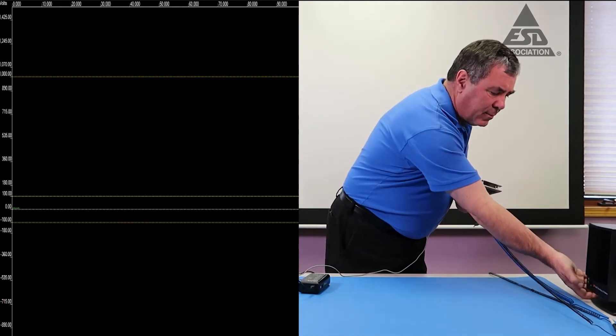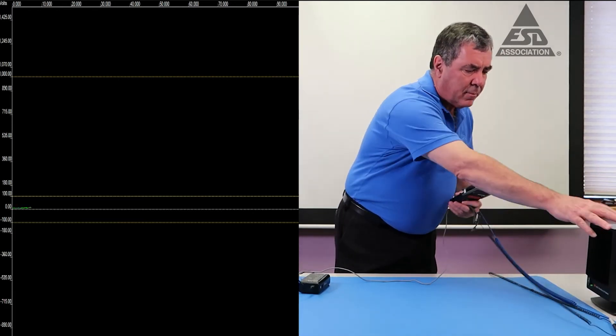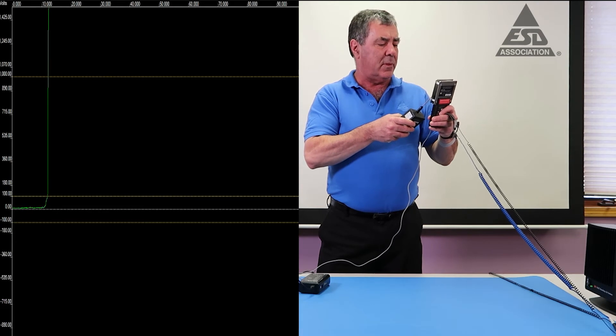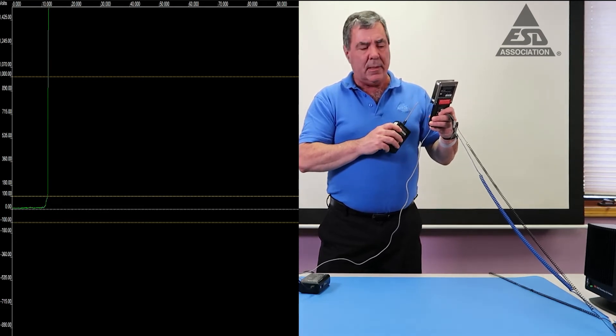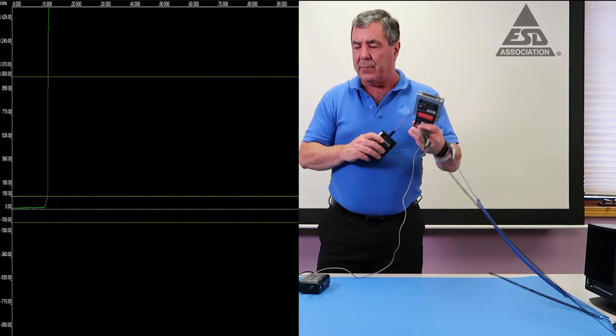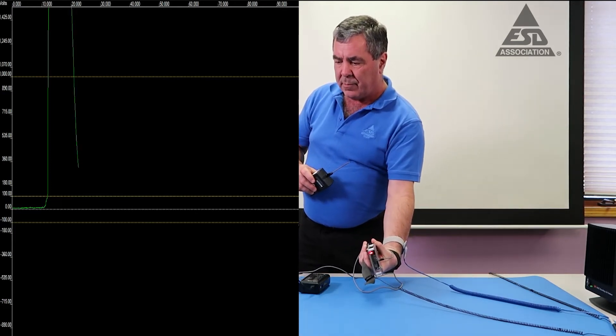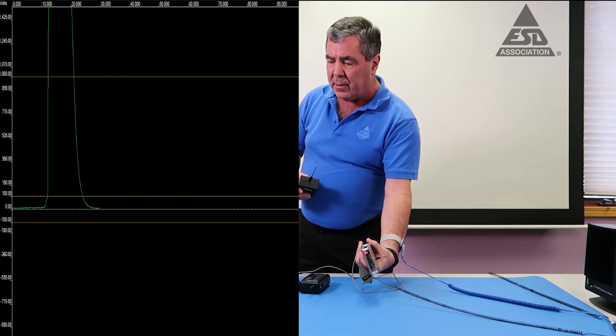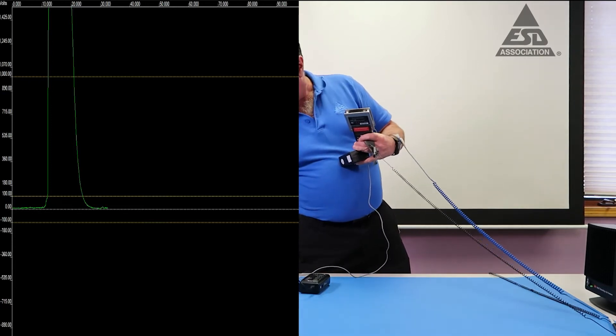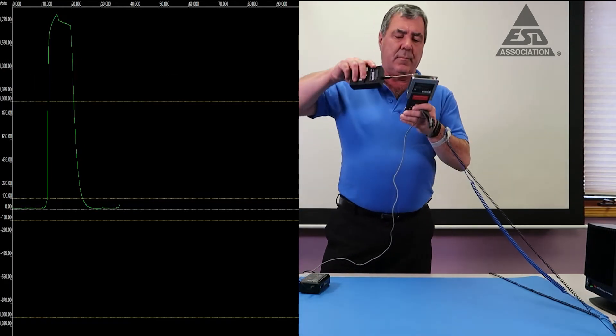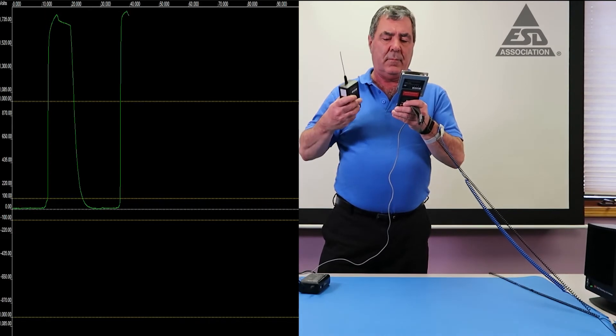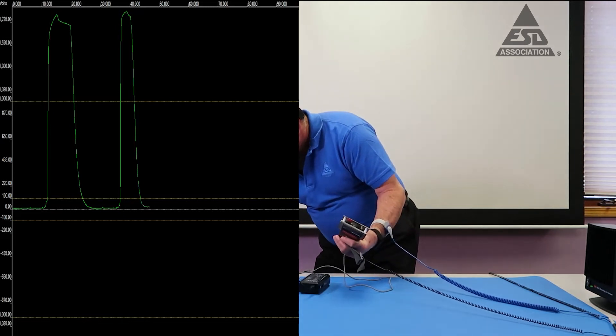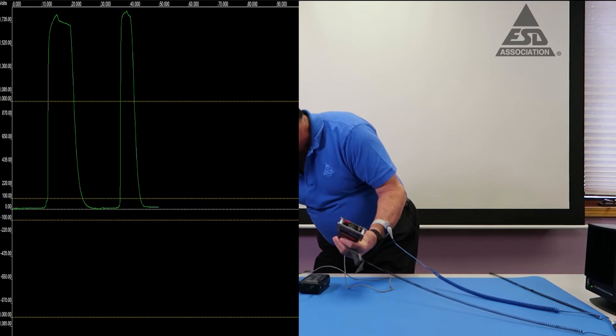And I'm going to charge this outside the ion fan's air stream, and then I'm going to put it perpendicular to the airflow. And you can see it comes down very quickly compared to when I didn't have the ionizer there at all. Let's do that again. And you can see it comes down very quickly and it looks like the decay is two or three seconds, which is probably within the spec.